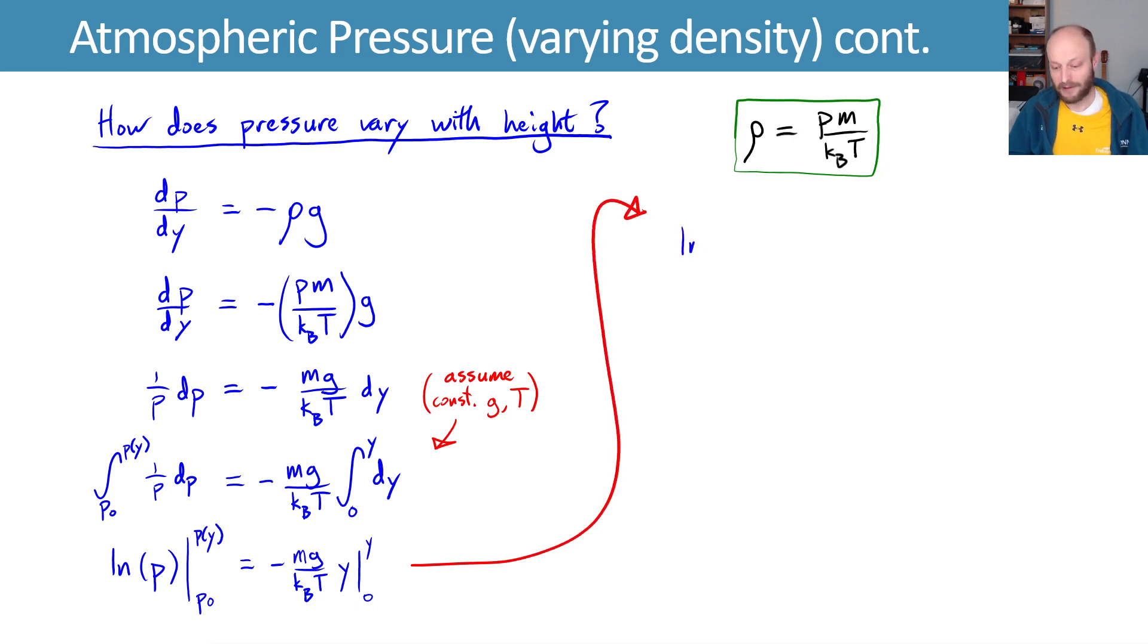Now we can evaluate those limits. ln of p minus ln of p₀ is equal to negative mg over kᵦT times y. We're trying to get a function for how pressure varies with height.